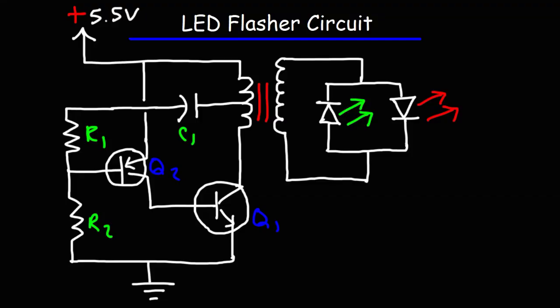In this video, we're going to talk about the LED flasher circuit. This circuit is basically an oscillator circuit attached to two different colored LEDs, a green LED and a red LED. Here is the circuit symbol for those two LEDs.